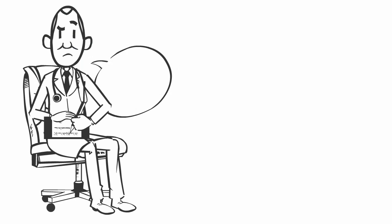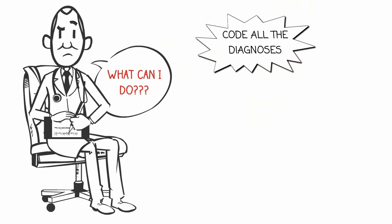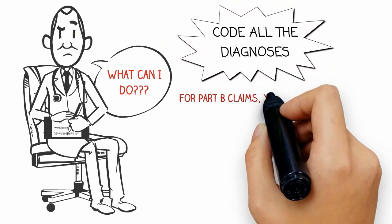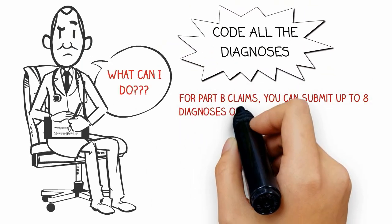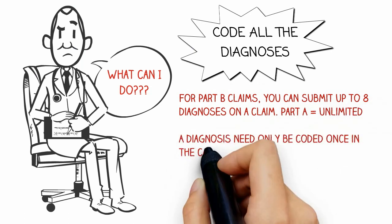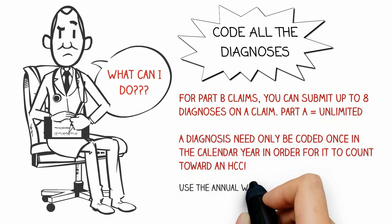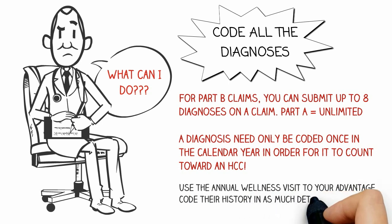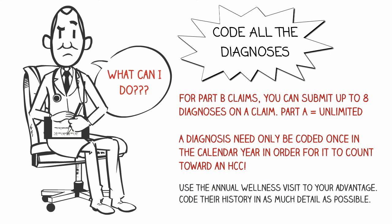So what can you do? Simply put, code all the diagnoses. On Part B claims, you can submit up to eight diagnoses on a single claim; with Part A it's virtually unlimited. What's important to note is that a diagnosis need only be coded once in the calendar year in order for it to count toward an HCC. It's also good to use the annual wellness visit to your advantage — code their history in as much detail as possible.